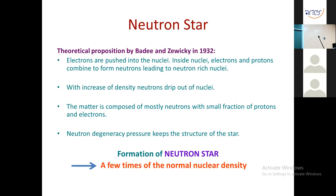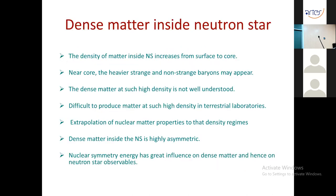The average density inside a neutron star is a few times normal nuclear matter density. Density increases gradually from surface to core, and near the core heavier strange and non-strange variants may appear. However, matter properties at such high densities are not well understood due to the difficulty of producing this kind of matter in terrestrial laboratories. One approach is to extrapolate nuclear matter properties to dense matter, keeping in mind that this matter is highly asymmetric.